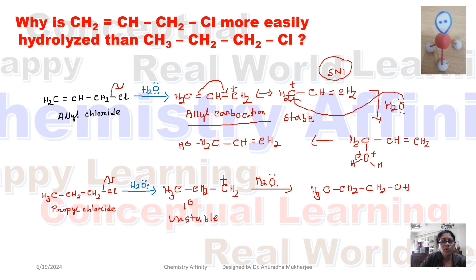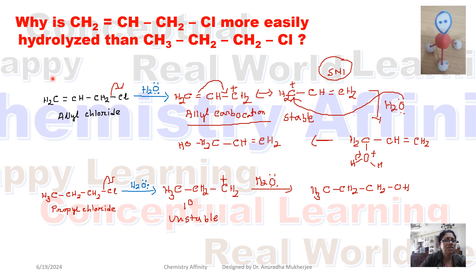Since the carbocation forming in propyl chloride is unstable, the rate of the reaction is slower. That is the reason allyl chloride undergoes hydrolysis faster than propyl chloride.